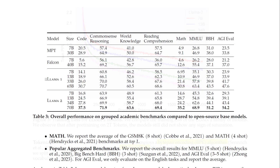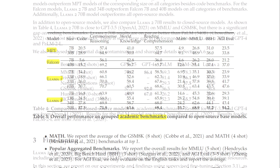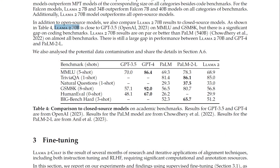They report results for LLAMA1 and LLAMA2 base models, Mosaic ML's pre-trained transformer models, and Falcon models on standard academic benchmarks. For all evaluations, their internal evaluations library was used, always picking the best score between their evaluation framework and any publicly reported results. In addition to open source models, they also compare LLAMA2's 70 billion results to closed source models.